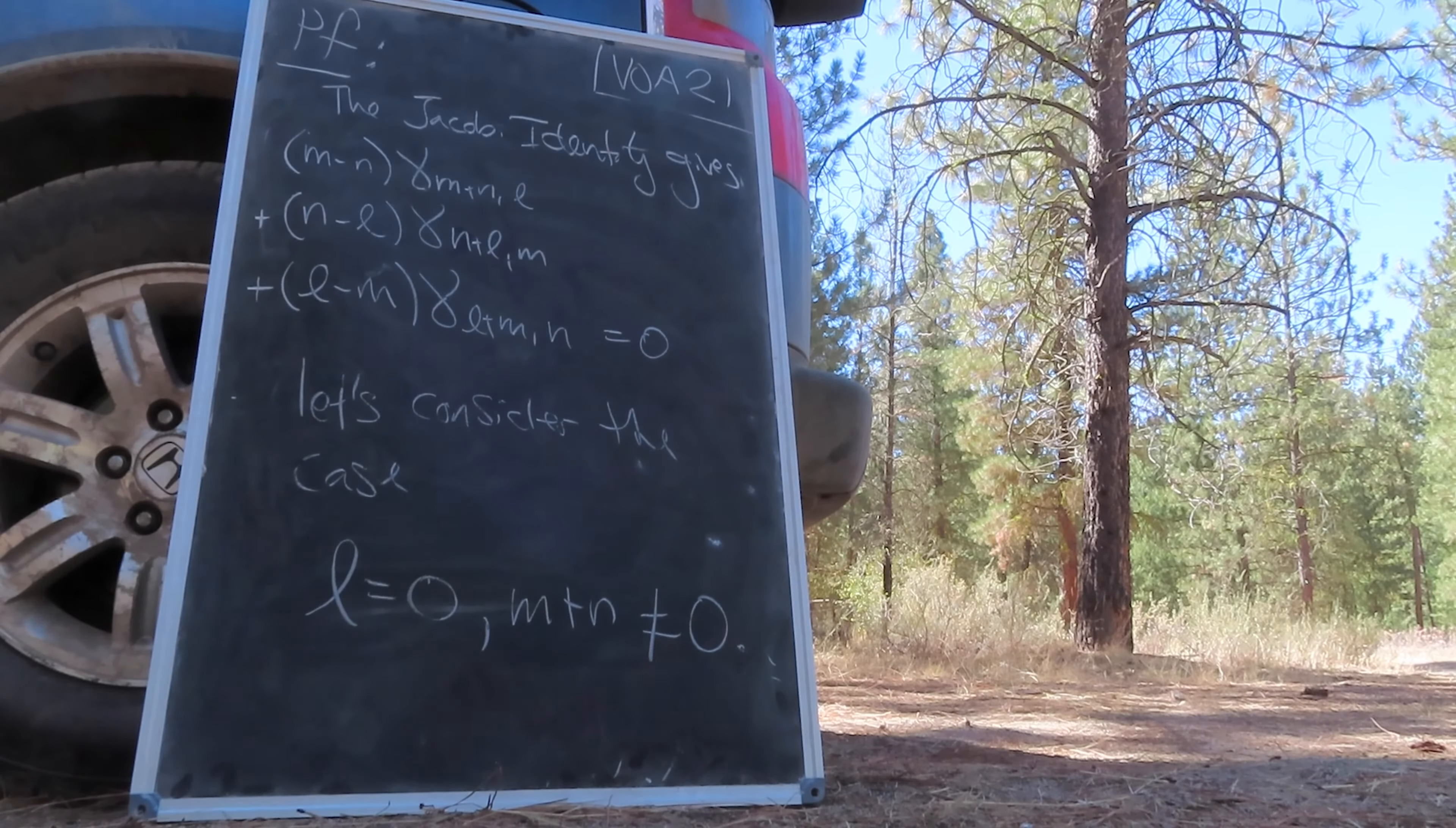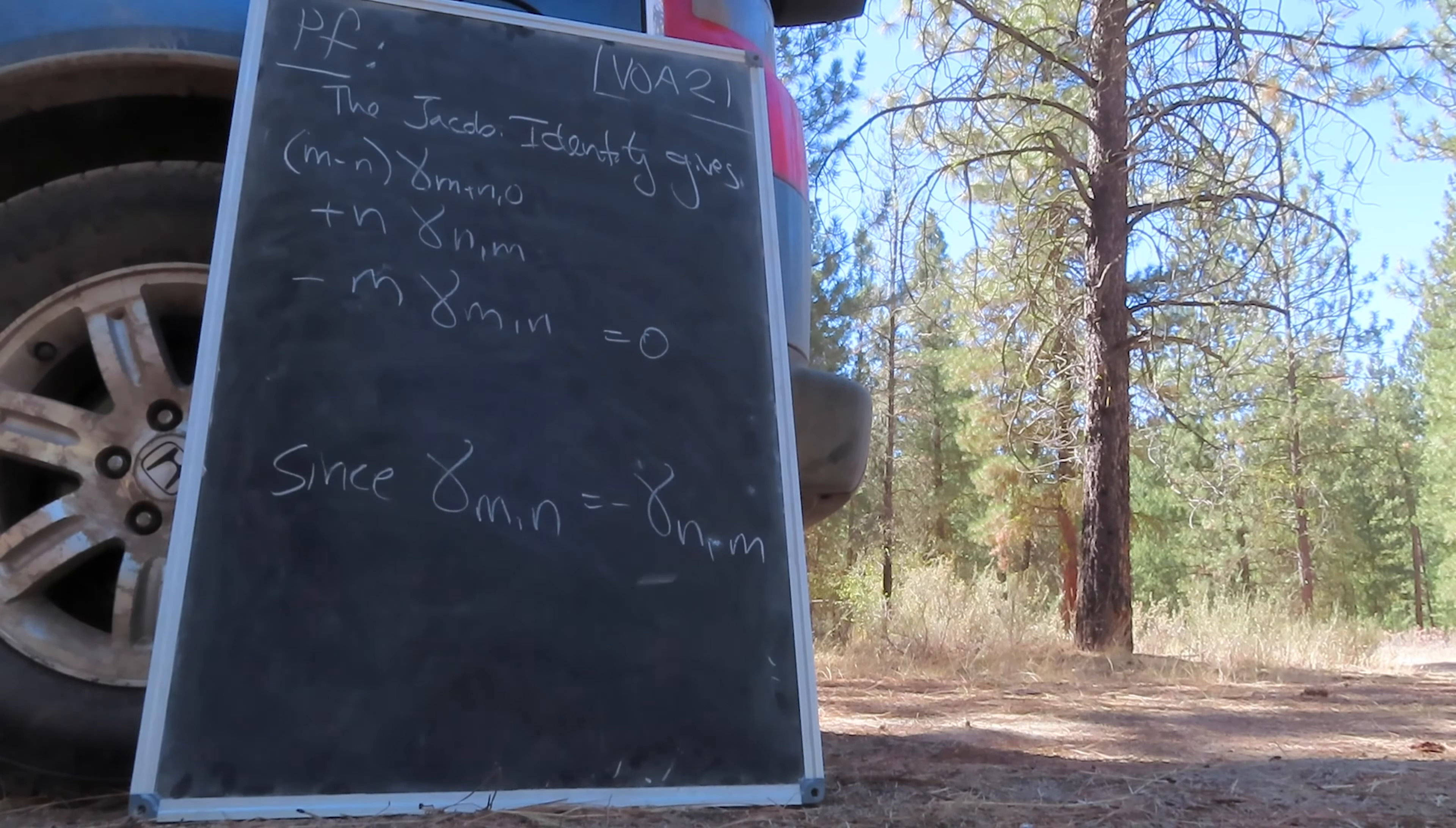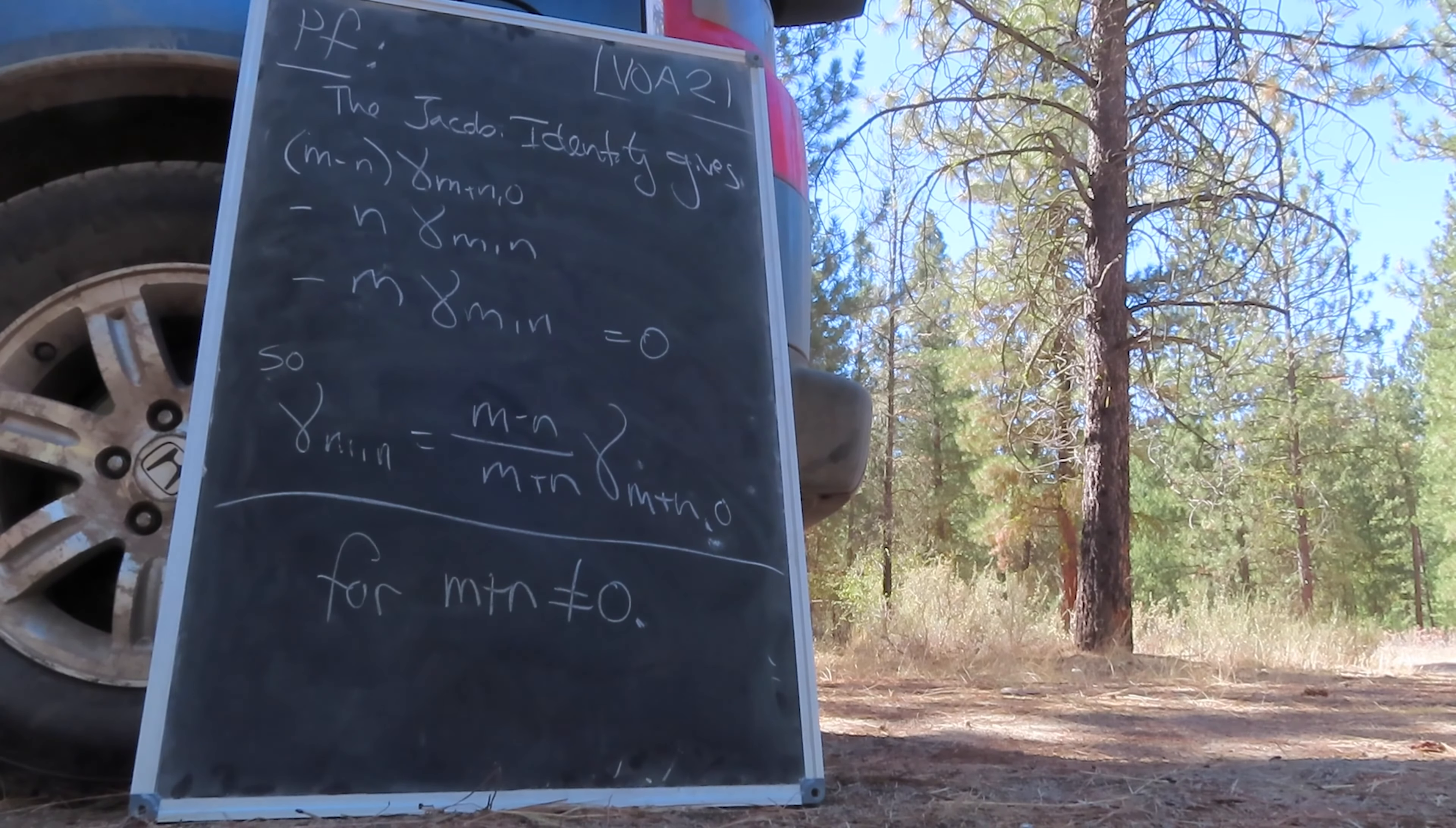let's consider the case where L vanishes and m plus n does not. Simplifying this relation with the anti-symmetry of gamma, we find a relationship between gamma n and gamma m and gamma m plus n zero, again for m plus n non-vanishing.